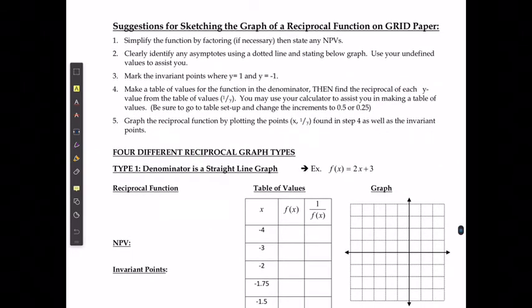When we're sketching reciprocal functions on graph paper, there's a couple of things that we want to take into account. The first one is we always want to try and simplify the function by factoring if necessary or possible so that I can state what my non-permissible values are. My non-permissible values are going to help me find my vertical asymptotes.